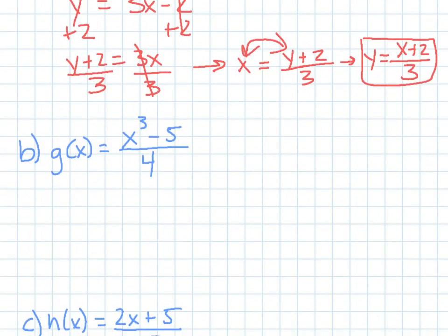The next part, g of x is equal to x cubed minus 5 all over 4. So let's do it the other way. So first I want to switch g of x to y. Then I want to switch x and y.